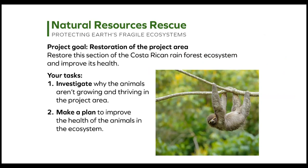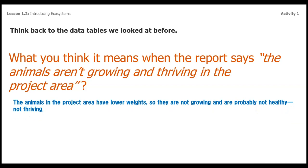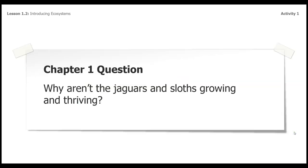This is a report from the group we're working with, Natural Resource Rescue. They plan to restore the section of the ecosystem and improve its health. They want us to help investigate why the animals aren't growing and thriving in the project area based on the data, and then we'll make a plan to improve the health of the animals. The animals in the project area have lower weights, so they're not growing and are probably not healthy — not thriving. So the chapter question for these videos will be: why aren't the jaguars and sloths growing and thriving?